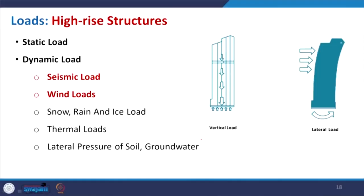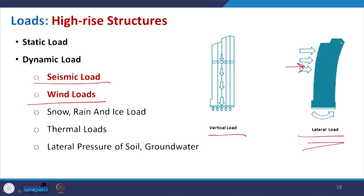Coming to the loads acting on high rise structures — similar loads as discussed earlier, but two parameters are very critical: seismic load and wind load. Broadly, loads are classified into vertical load — axial load, taken care of by columns, beams, and other elements — and lateral load, either from wind or ground motion from earthquakes. Different seismic waves are created during earthquakes that create additional challenges for tall structures.